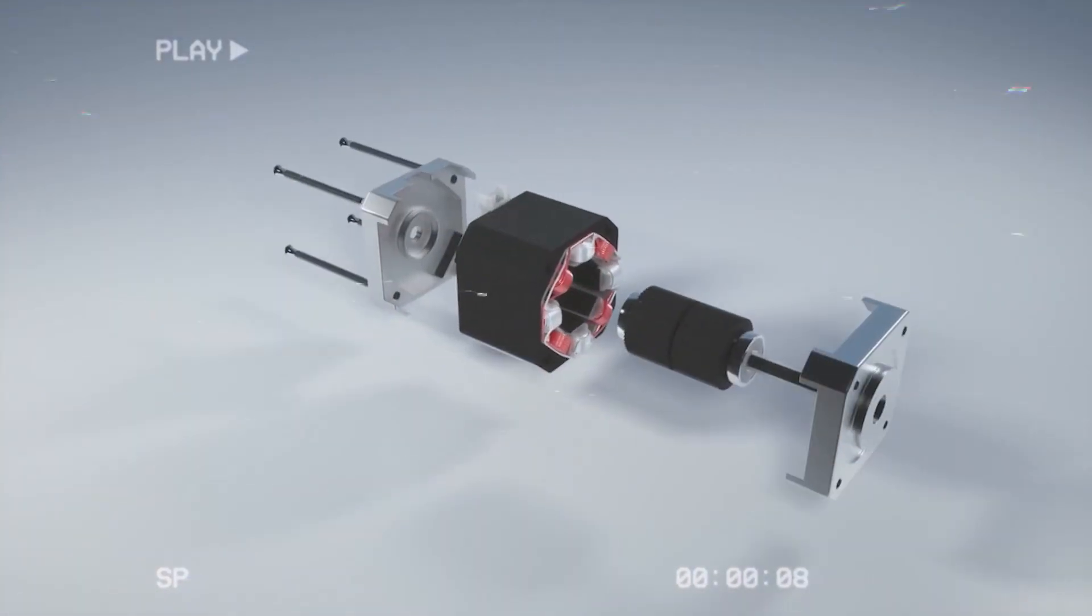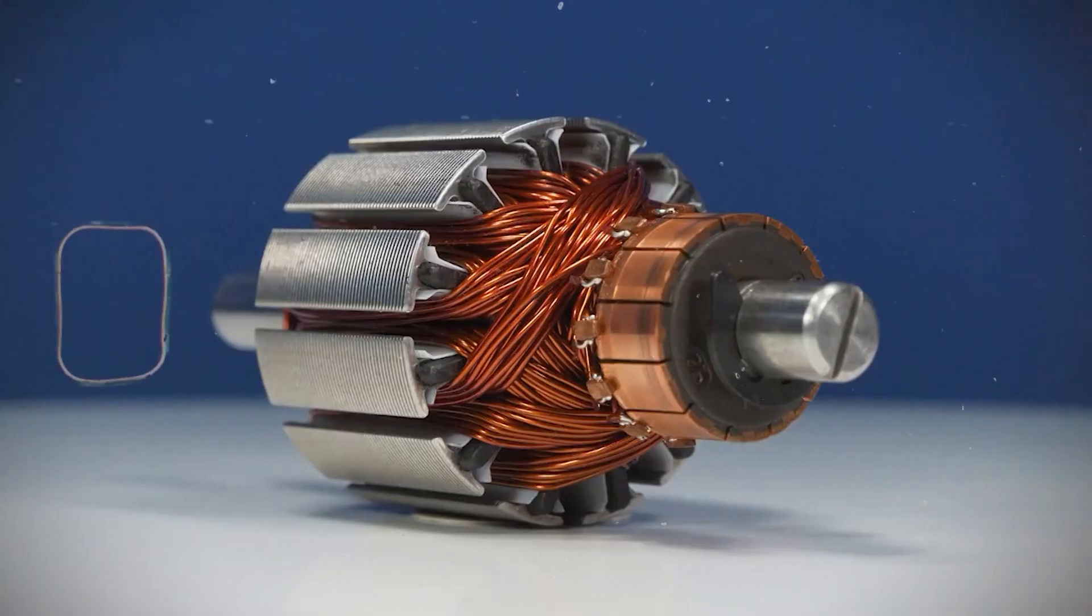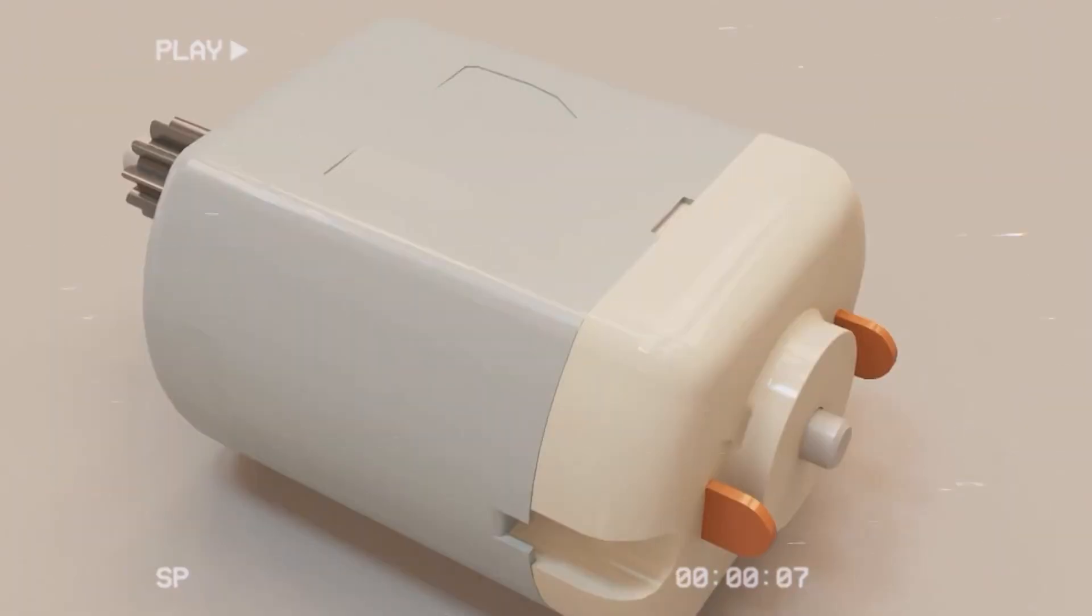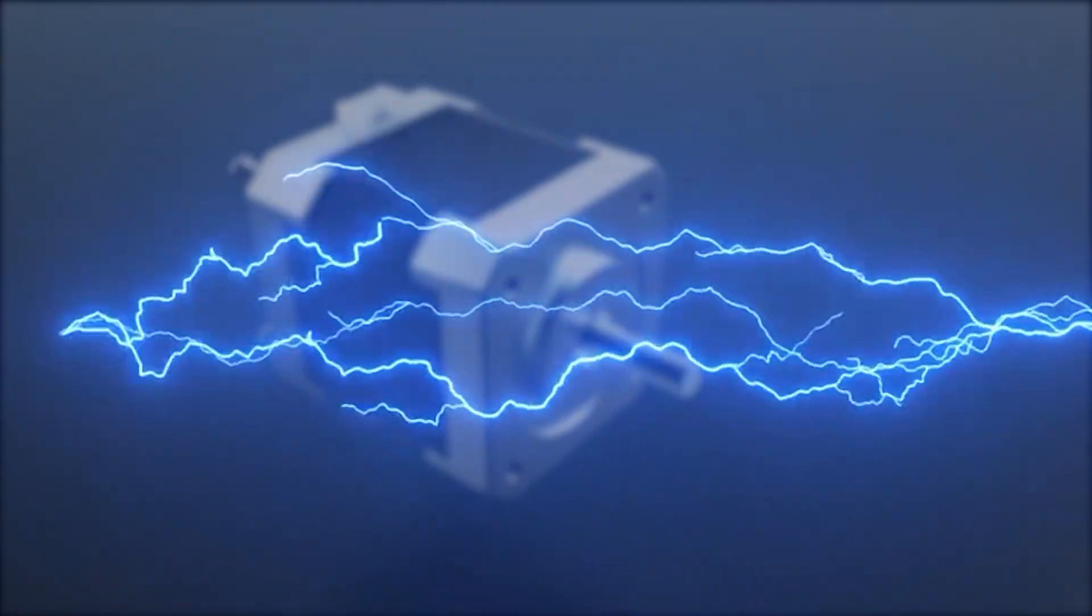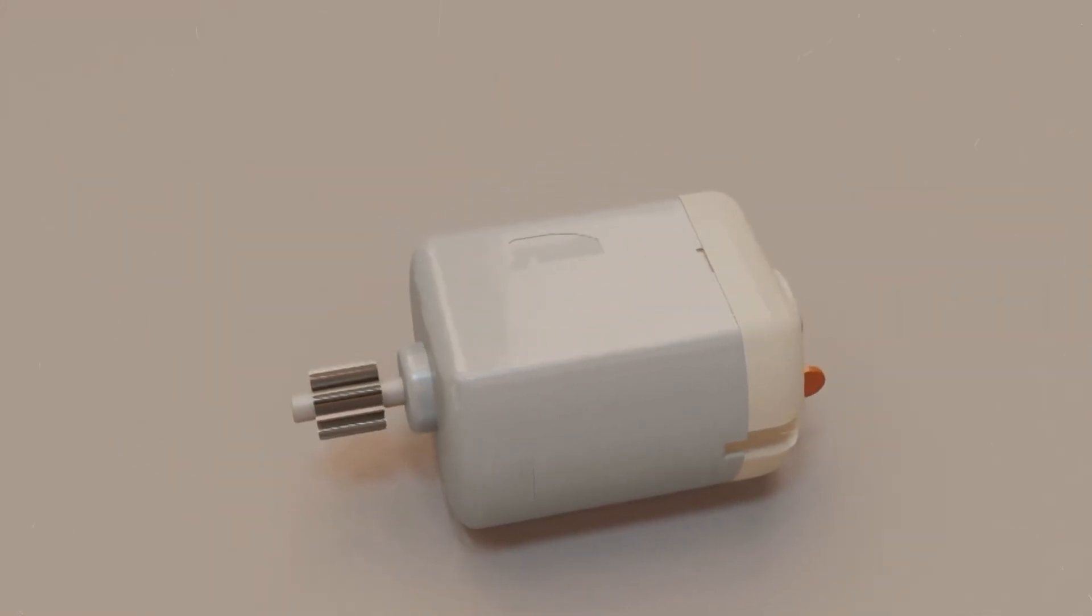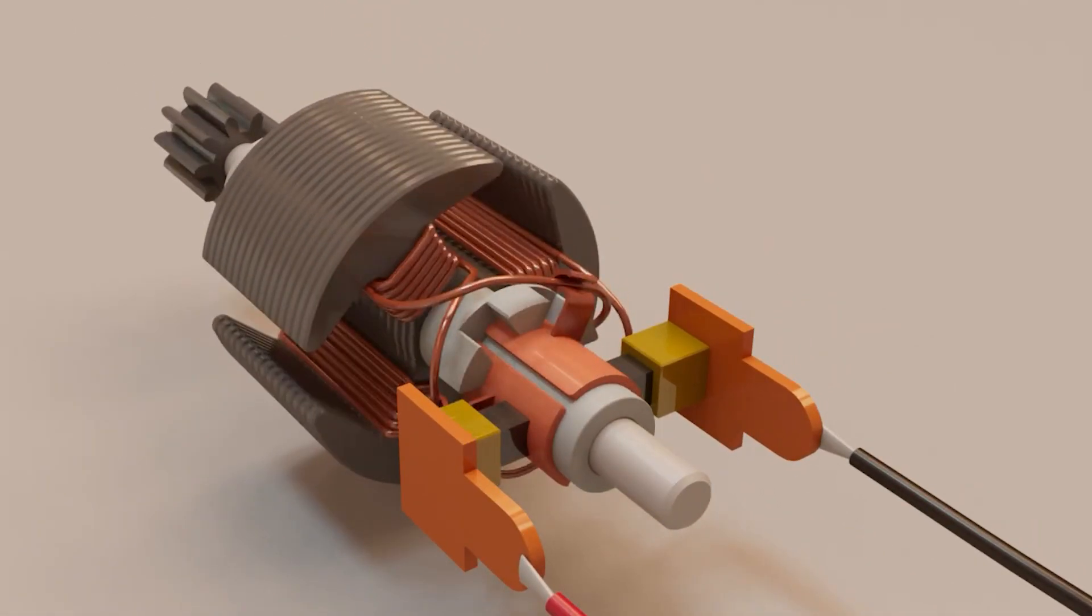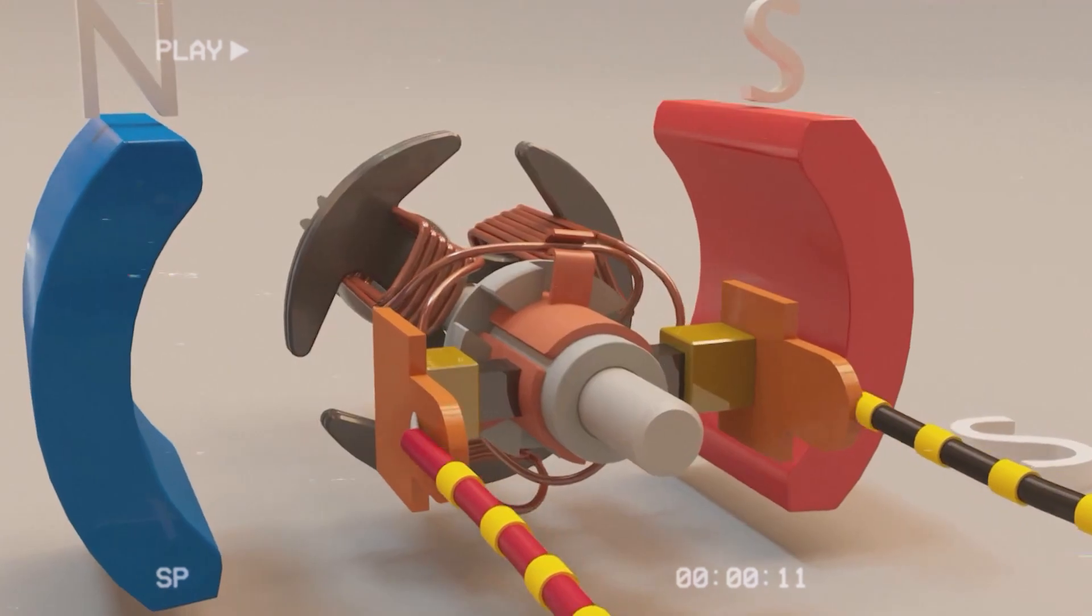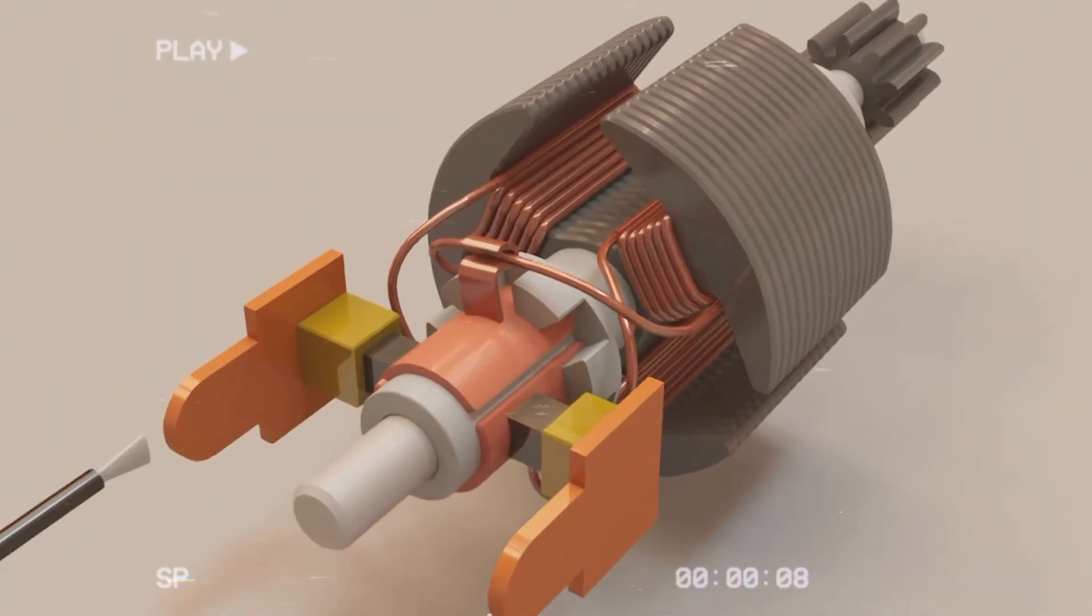Motors solve this problem elegantly with a device called a commutator. The commutator is a split metal ring attached to the armature. Brushes, conductive contacts pressed against the ring, slide as the ring rotates. Each time the armature reaches halfway, the brushes shift to the opposite side of the split ring, reversing the current. This automatic switching ensures that the electromagnet's poles flip just when needed, keeping the spin alive. The commutator does what human hands cannot. It perpetually reverses polarity with perfect timing. As long as the battery remains connected, the cycle never ends. Current flows, poles flip, attraction and repulsion alternate, and the armature spins continuously.